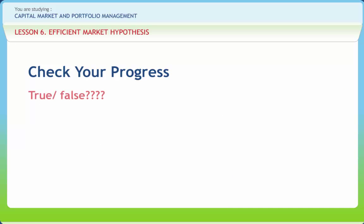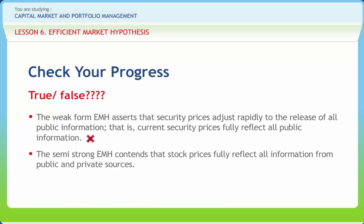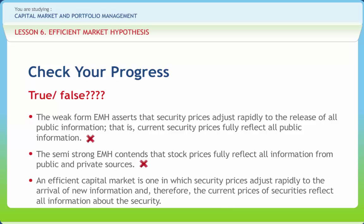Now let us check if we have understood the various concepts discussed in this lesson. The weak form EMH asserts that security prices adjust rapidly to the release of all public information — right or wrong? Wrong. The semi-strong EMH contends that stock prices fully reflect all information from public and private sources — right or wrong? Wrong. An efficient capital market is one in which security prices adjust rapidly to the arrival of new information, and therefore the current prices of securities reflect all information about the security — right or wrong? Right.